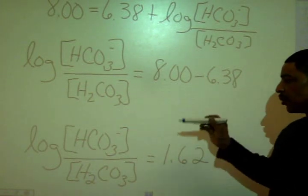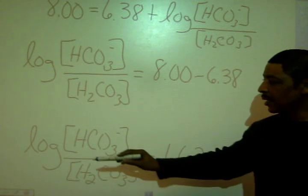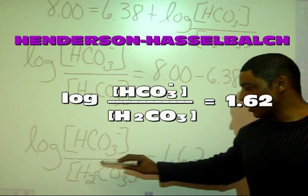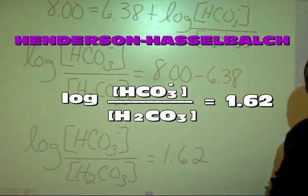Subtracting these two values will now give me log anion over acid is equal to 1.62.